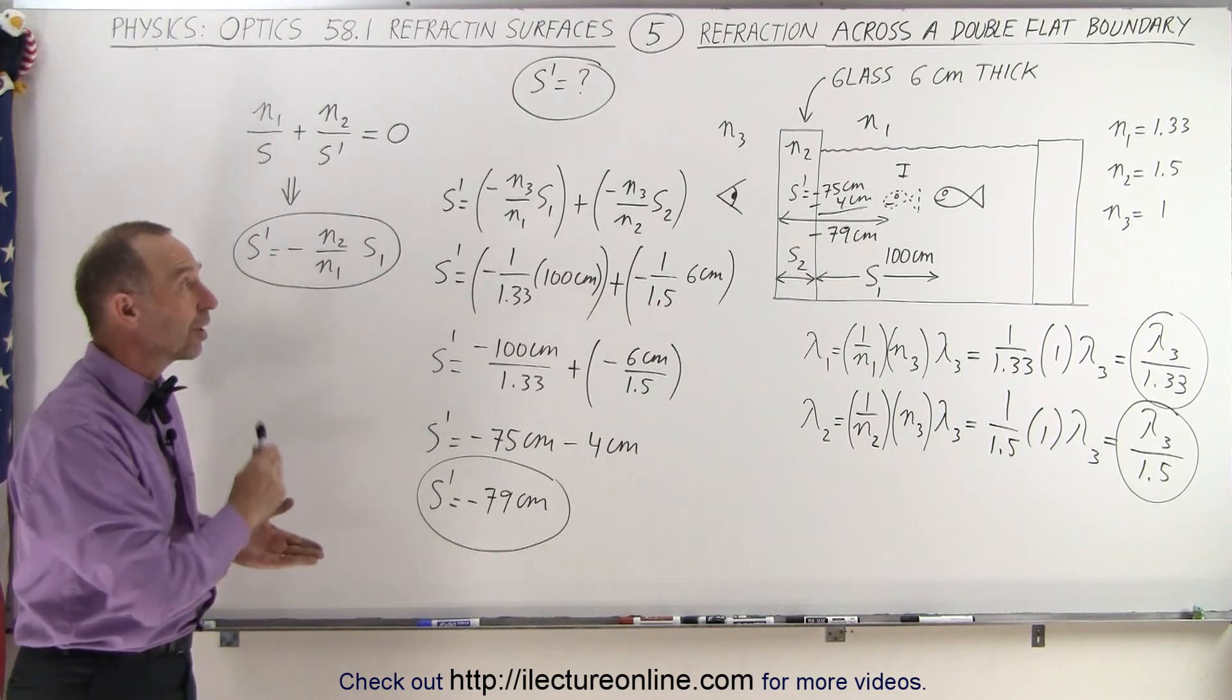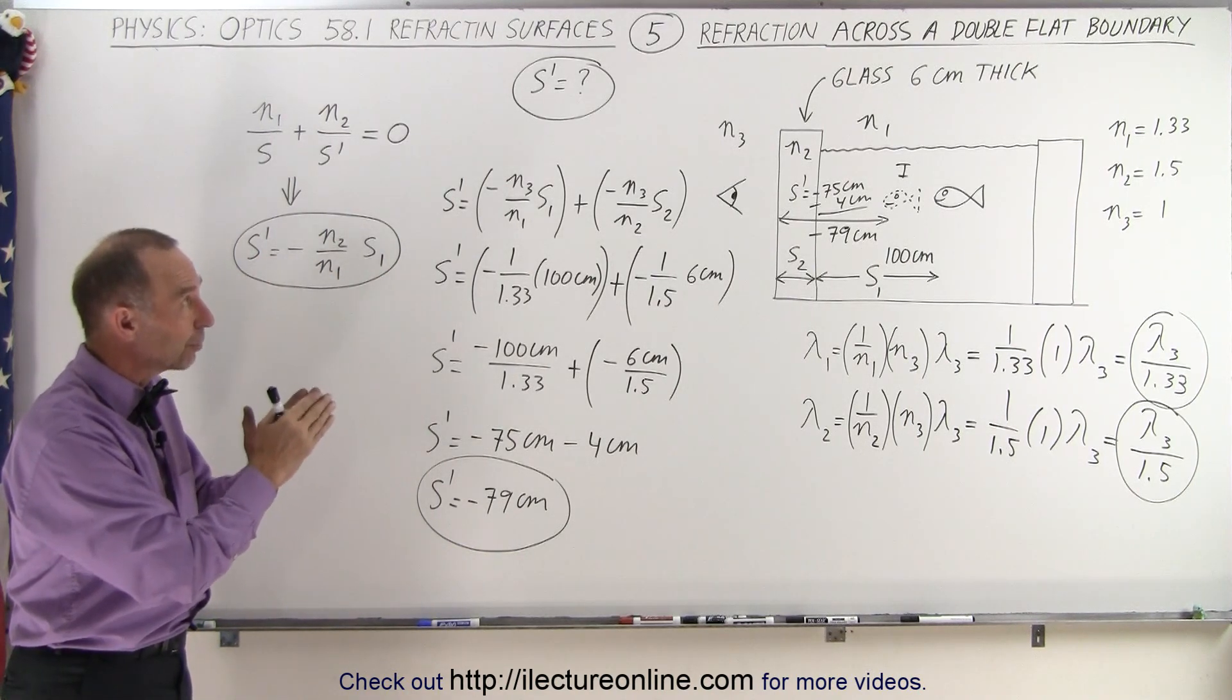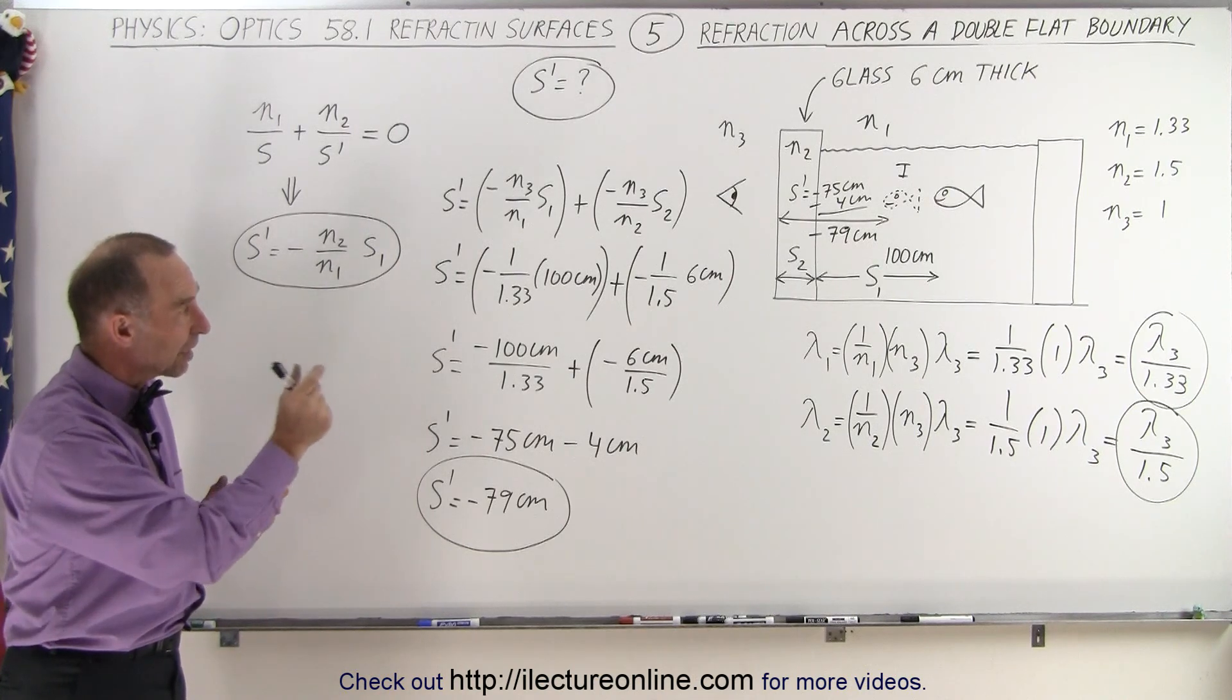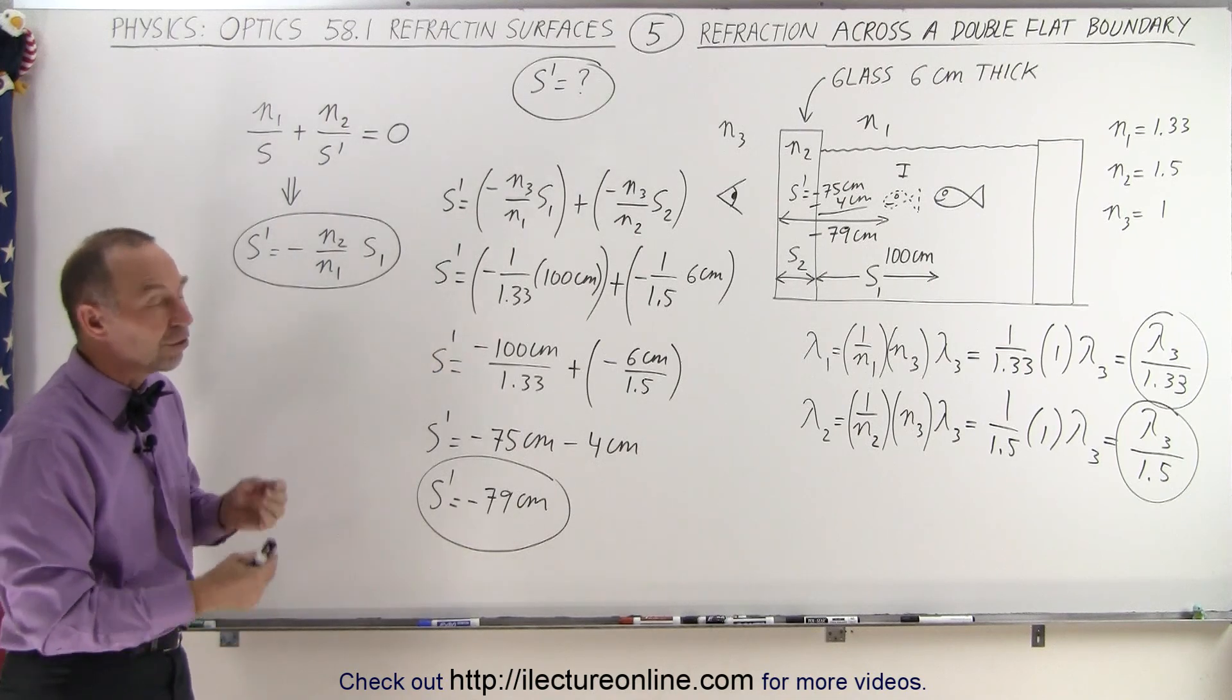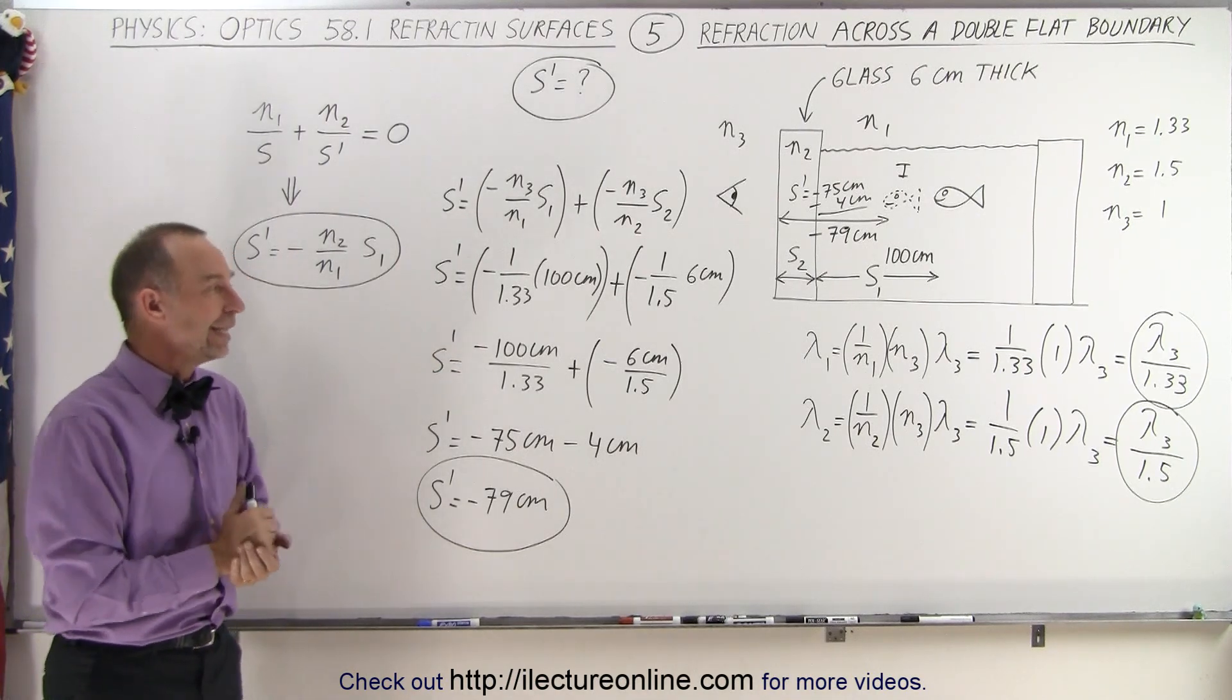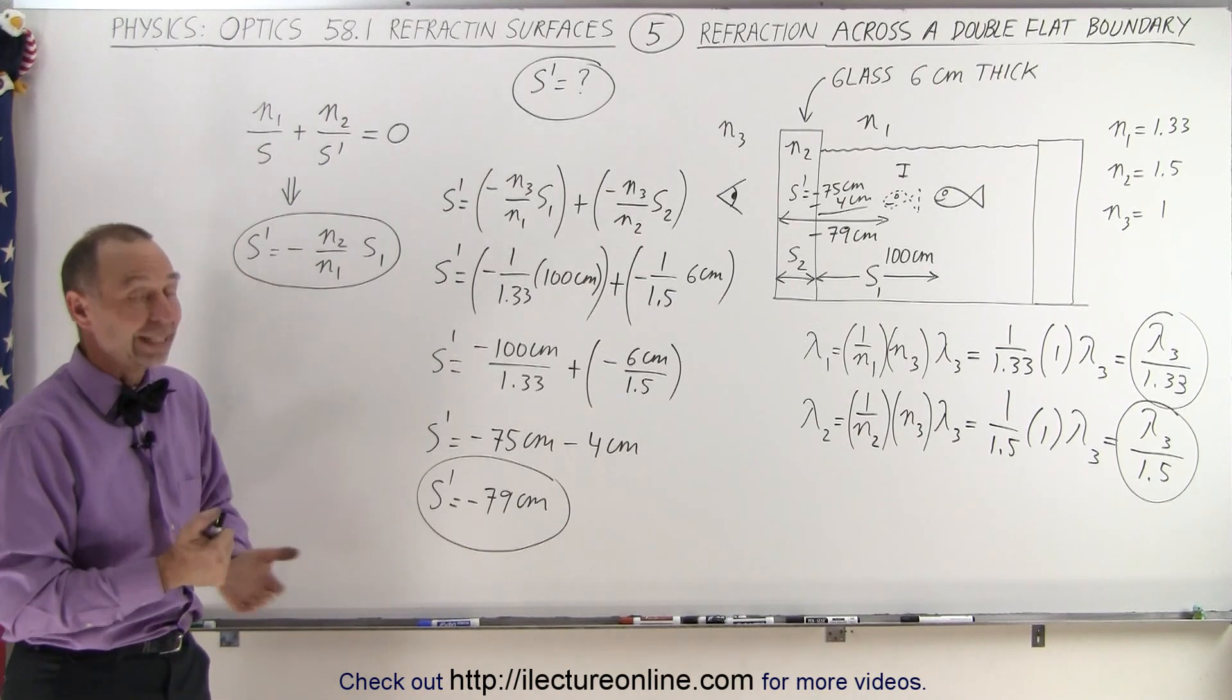And that's how it's done when you have a double boundary, a double flat boundary. You have to take care of both regions and take into account how the wavelength of light changes through each of the regions based upon the differences in the indices of refraction. And that's how it's done.